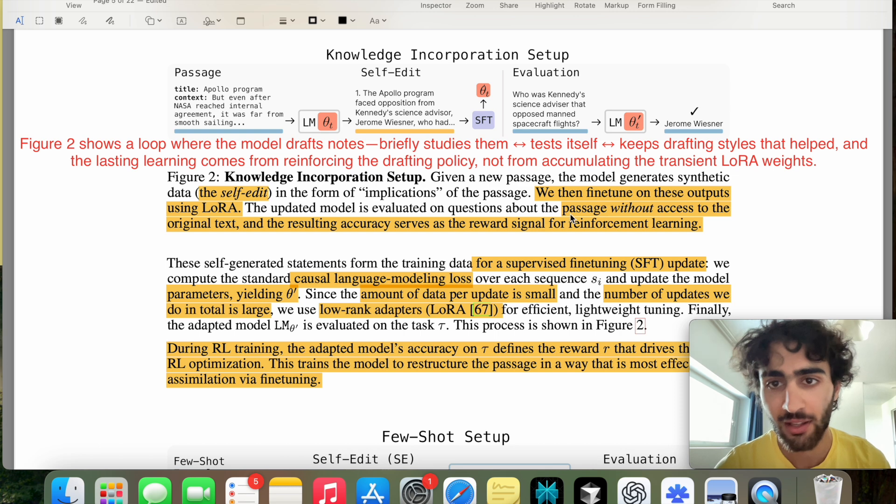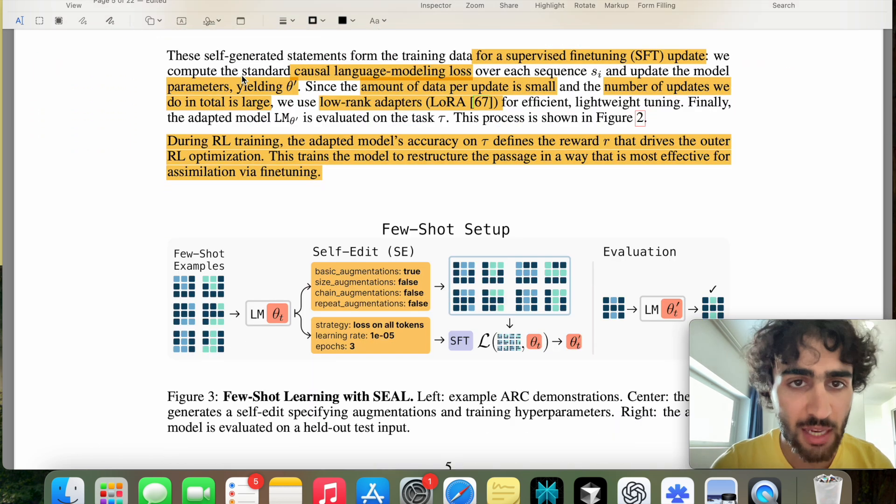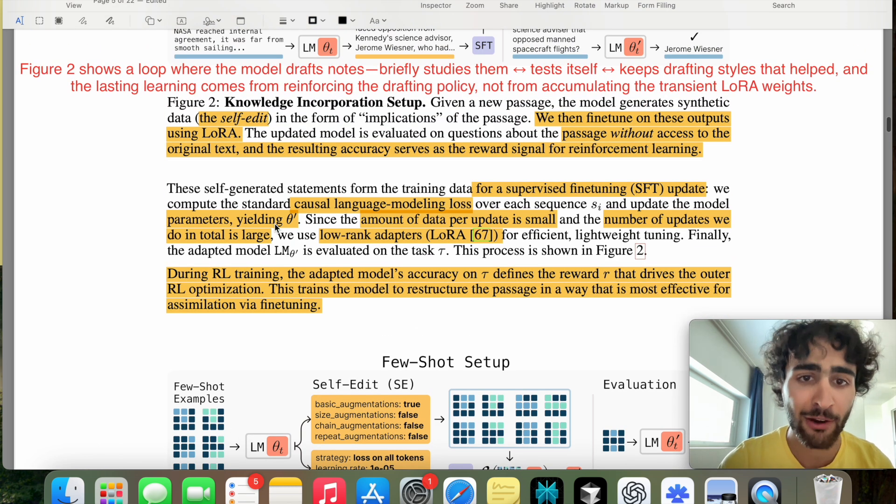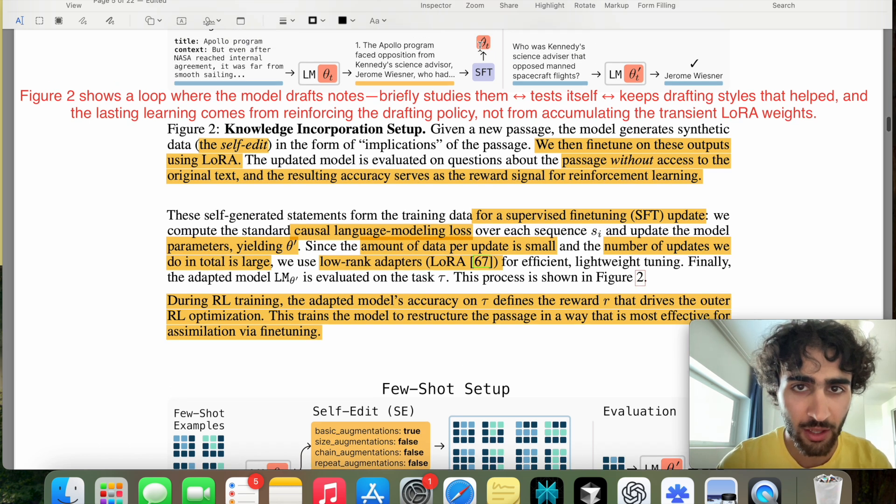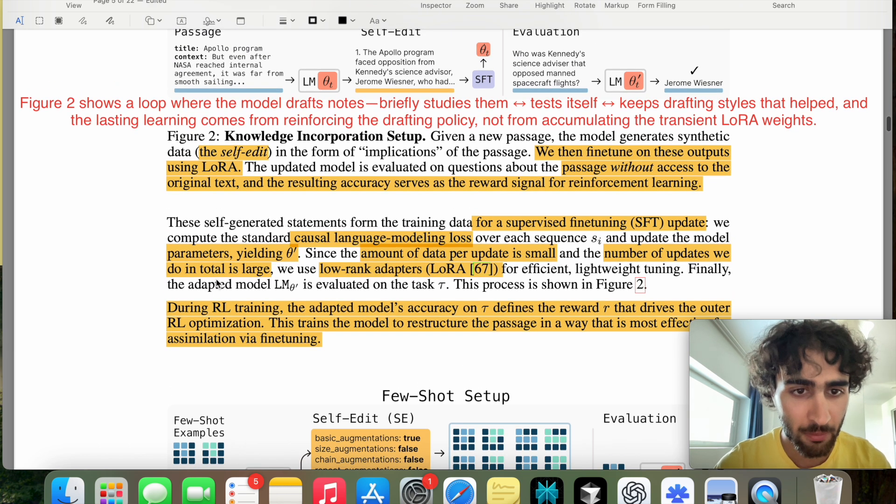If you look at the figure description itself, you say, we fine-tune on these outputs using LoRa. And the updated model, of course, has to answer the question without access to the original text. If that was the case, then this would literally be a moot point, it would know exactly what to say, because this would be in its context. And then the resulting accuracy is the reward signal for the RL. And in this case, the reward signal would be one. Okay, these self-generated statements form the training data for the SFT update, which is to say that we compute the standard causal language modeling loss, which is to say cross-entropy. I'm not sure why they're using, yeah, complex terms to sound sophisticated.